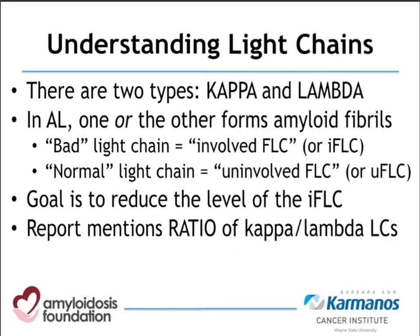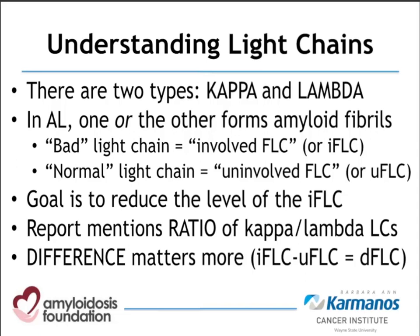The report also routinely gives us the ratio of kappa and lambda light chains. But because the uninvolved or normal light chain is often in the normal range, the ratio really is just a reflection of how much extra bad light chain there is. We really focus on the difference between these, which we call the difference between the free light chains — the DFLC. That's the abbreviation you'll see on subsequent slides.